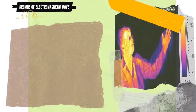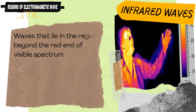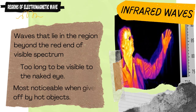Infrared waves lie in the region beyond the red end of the visible spectrum. The wavelength of infrared waves is too long to be visible to the naked eye. Infrared radiation is most noticeable when given off by hot objects, especially when objects are red hot.